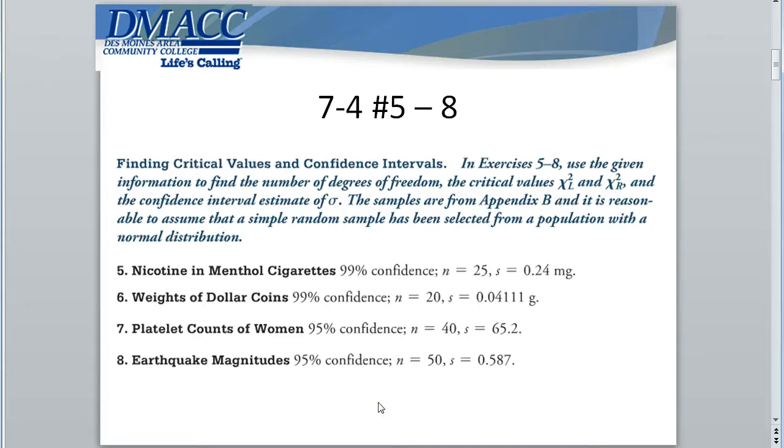In this video, I'd like to talk about how to find critical values using the chi-squared distribution. We'll be using the chi-squared distribution to find confidence interval estimates of the standard deviation or variance, or when we get into hypothesis testing, to find critical values and also p-values for hypothesis tests of standard deviations and variances.